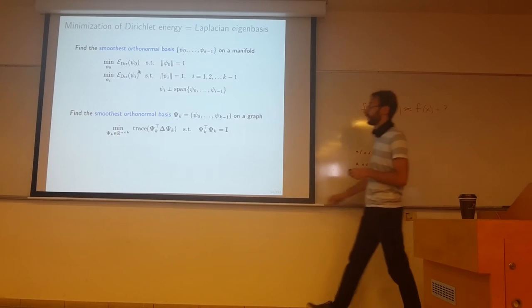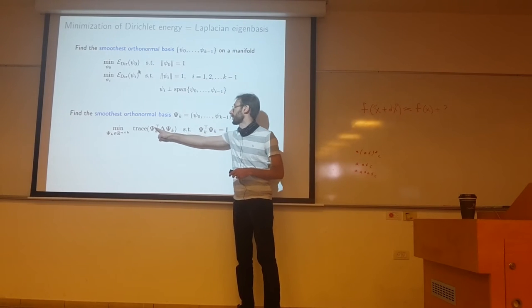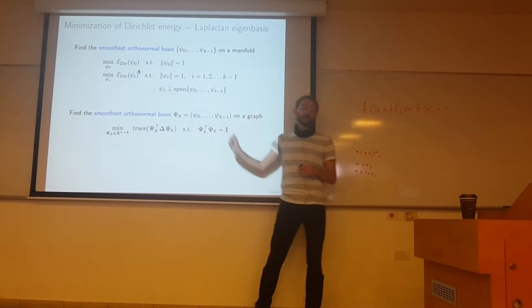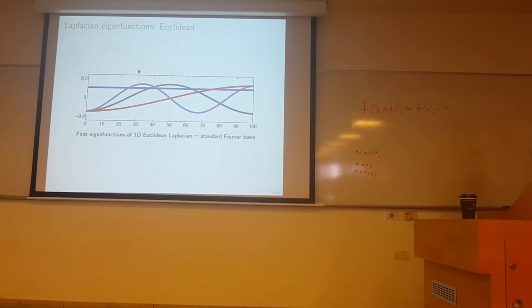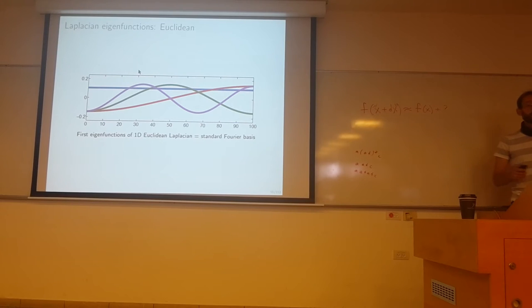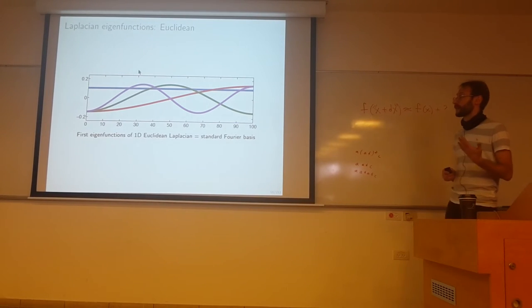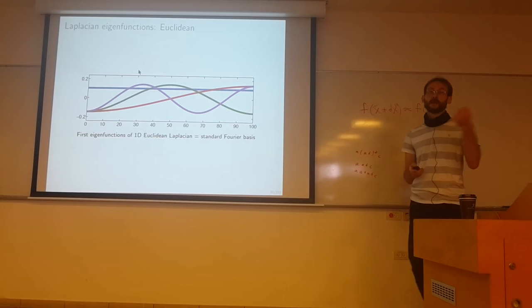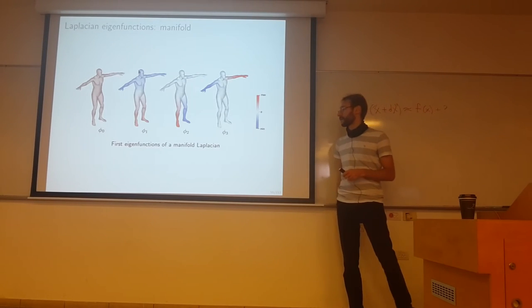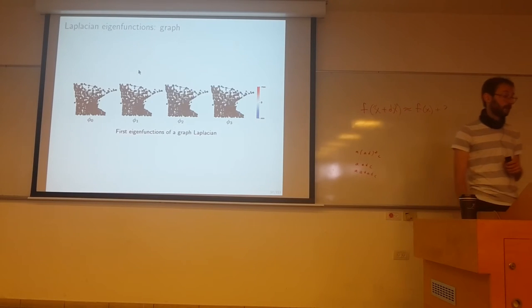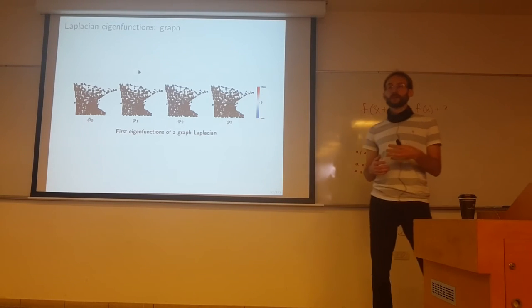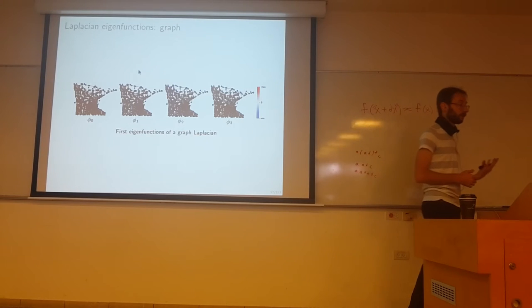This is how the eigenfunctions look. On the Euclidean domain, one-dimensional, the eigenfunctions of the one-dimensional Euclidean Laplacian are the standard Fourier basis, sines or cosines with a phase shift. This is how the eigenfunctions look on a manifold. This is how they look on a graph. You can take a non-Euclidean domain, whether it's a manifold or a graph, compute the Laplacian. If you work with a discrete structure, it will be represented as a big sparse matrix. Compute these eigenvectors and eigenvalues and you get an orthogonal basis.